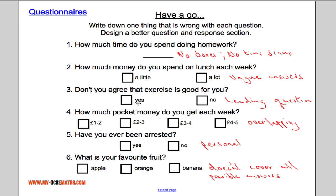Third: 'Don't you agree exercise is good for you? Yes or no?' — it's a leading question because saying 'don't you agree' suggests you should agree. Fourth: 'How much pocket money do you get each week?' — the answer boxes overlap, which is never acceptable in a good questionnaire. Fifth: 'Have you ever been arrested?' — very personal; many people won't want to answer that. Sixth: 'What's your favourite fruit? Apple, orange, or banana?' — it doesn't cover all possibilities, such as pears or strawberries, so you need to cover all possible answers.